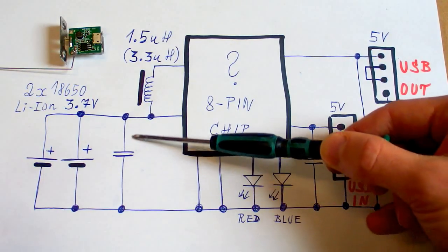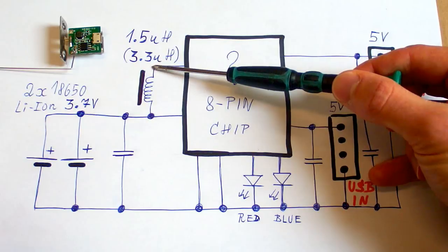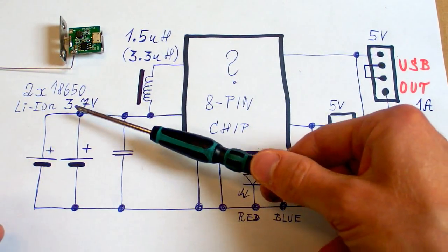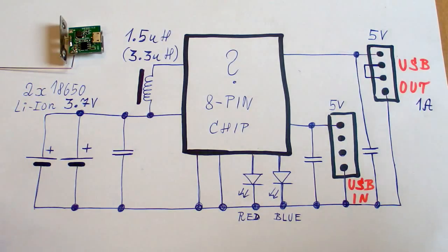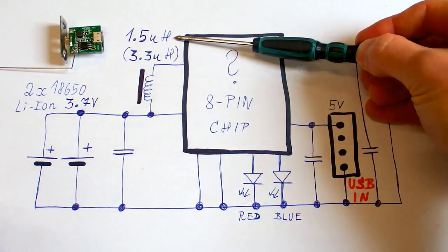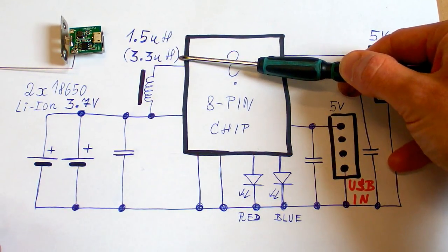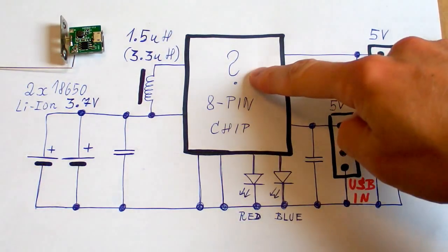And there is an inductor for the boost converter to be able to convert from 3.7 volts to 5 volts. In one of them the inductor is 1.5 micro henry and in the other one it's 3.3 micro henry. So this is the entire power bank. The chip just contains everything.